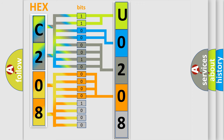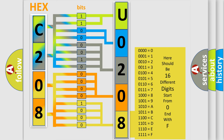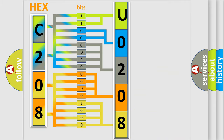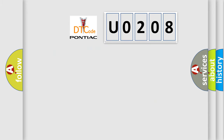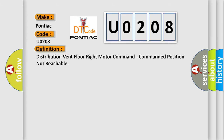A single byte conceals 256 possible combinations. We now know in what way the diagnostic tool translates received information into a more comprehensible format. The number itself does not make sense if we cannot assign information about what it actually expresses. So, what does the diagnostic trouble code U0208 interpret specifically for Pontiac car manufacturers? The basic definition is: distribution vent floor right motor command, commanded position not reachable.